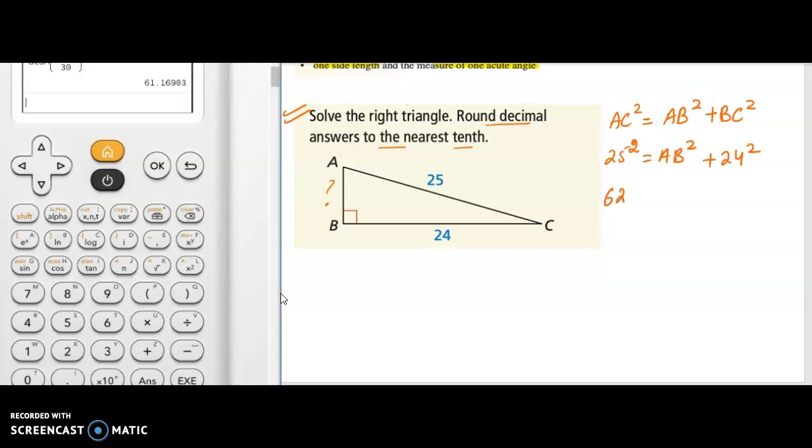Now I can plug all these values in my calculator and then find it out. 25 times 25 is 625 and AB squared. Let's see what is 24 times 24. 24 times 24 will give you 576. Now you can subtract 576 both sides and if you do that you will get 625 minus 576 is 49. 49 is equal to AB squared. Now to take the exponent out I can take radical because radical and exponent they are the opposite of each other they cancel out. So I have AB which is nothing but 7 in this case.